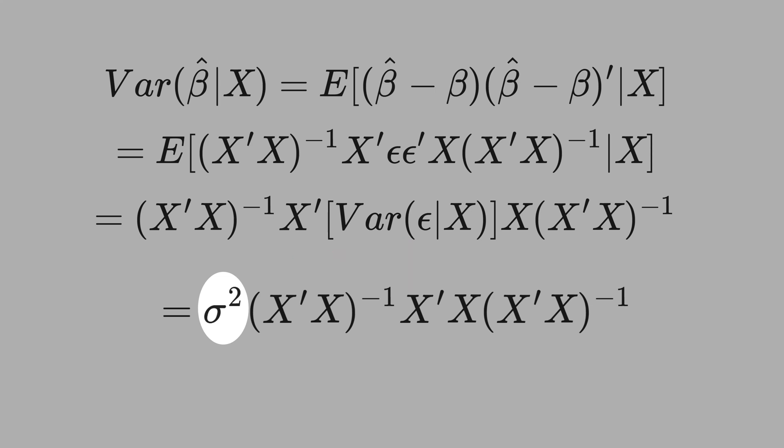This term is a constant and stays outside. And these two terms here can simplify. Then you get sigma squared times the inverse of the covariance matrix of X. This is the formula that the computer uses to calculate the variance under homoskedasticity. See that homoskedasticity is a special case of heteroskedasticity.